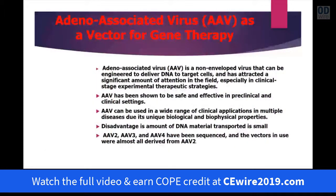The AAV vector is a non-enveloped virus — it's actually the virus that causes the common cold — and it's engineered to deliver DNA to the target cells that will solve the problem of whatever the genetic mutation is. It's attracted significant attention because of the ease of delivery. It's been shown to be a safe method because the body does not strongly react to the adenovirus in the eye, which is immunoprotected. It has a wide range of applications. The only difficulty is that the amount of genetic information you can put into an adenovirus is pretty small, so scientists have developed methods using combinations of AAV vectors to produce more DNA for gene therapy. As of now, the simplest approach — the one approved by the FDA — has been a single AAV virus.